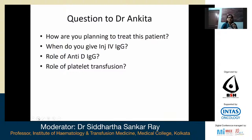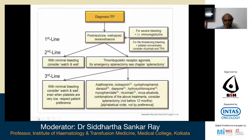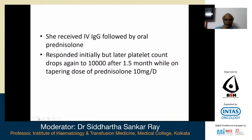In severe bleeding episodes such as mucosal hemorrhages, platelet transfusions may be given as an emergency measure alongside IVIG or steroids. Tranexamic acid should also be given, ensuring there is no hematuria, which would be a contraindication. So for this patient, the plan is to start with IVIG followed by prednisolone. The slide shows first-line, second-line, and third-line treatment options. In this case, the patient was given IVIG followed by oral prednisolone and initially responded, but platelet count dropped again to 10,000 after one and a half months while on tapering prednisolone at 10 milligrams per day.